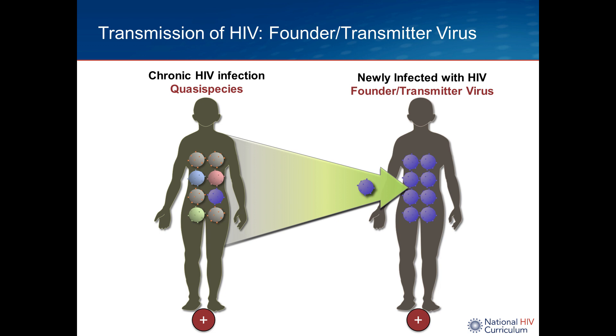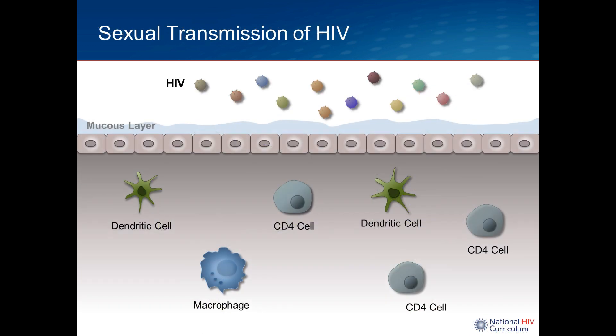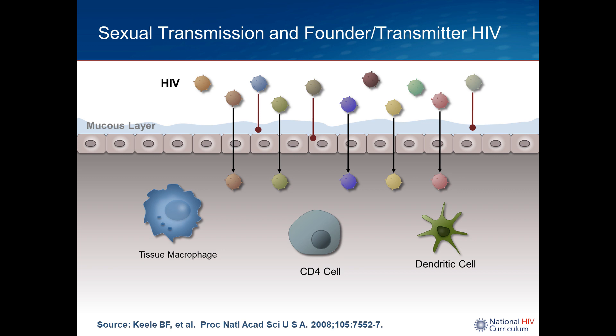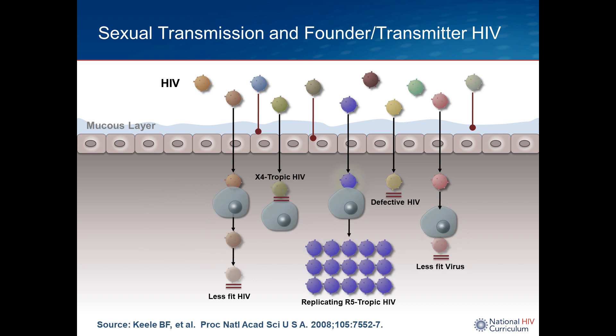The founder virus concept is very important in the prevention world. Looking at the mucosal level during sexual transmission, HIV comes in and contacts the mucosal layer, then targets below the epithelial cells — the dendritic cells, CD4 cells, and macrophages. Even though multiple quasi species are present, essentially only one virion, the so-called founder virus, has all the capable factors that lead to transmission.